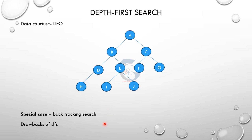DFS example: A is the root node. We visit A to B, then B to D, then D to H. If we reach the deepest level without reaching the goal, we use backtracking. H to D is already visited, D to B is already visited. Then B to E is a new node. E to I — we reach the goal node.